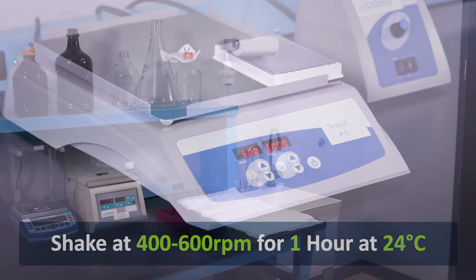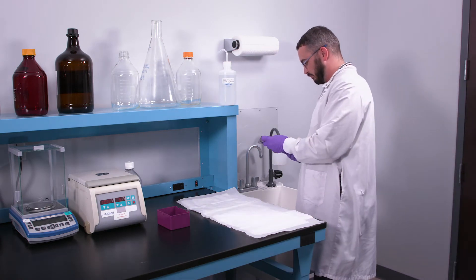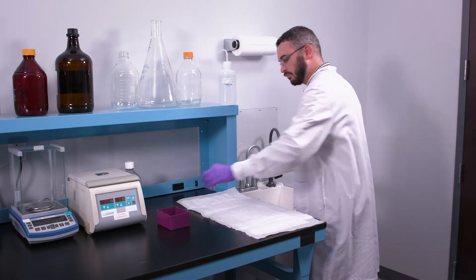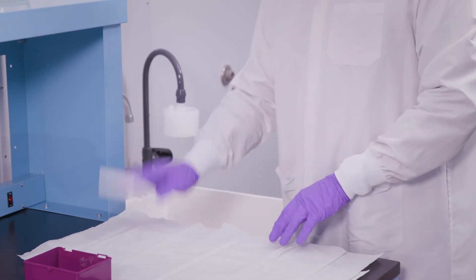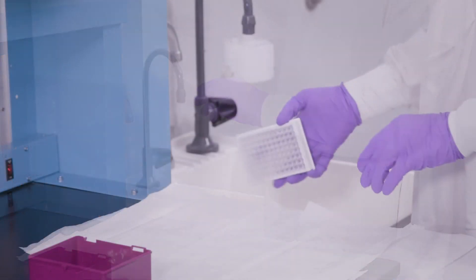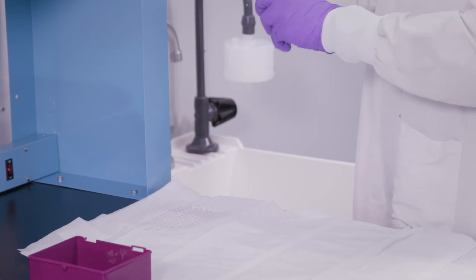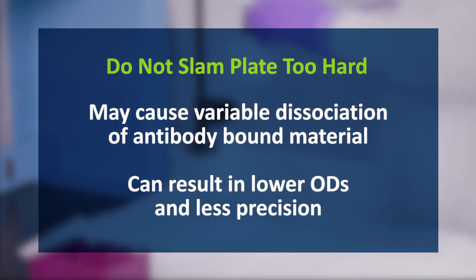After 1 hour, dump the assay plate into a large sink or appropriate container. And then, blot the assay plate over absorbent paper. Be sure to gently but firmly tap the assay plate to remove most of the residual liquid. Aggressively banging the plate or the use of vacuum aspiration devices to remove all residual liquid is not necessary and may cause variable dissociation of antibody-bound material. This can result in lower ODs and less precision.